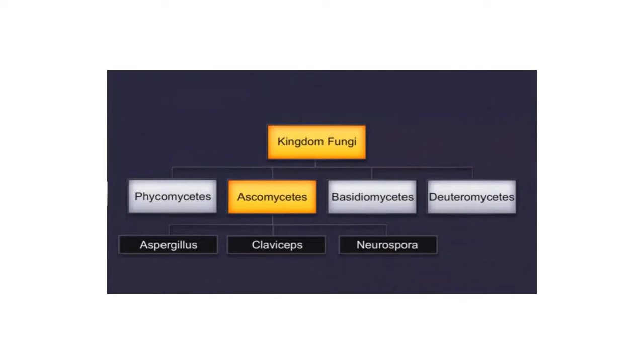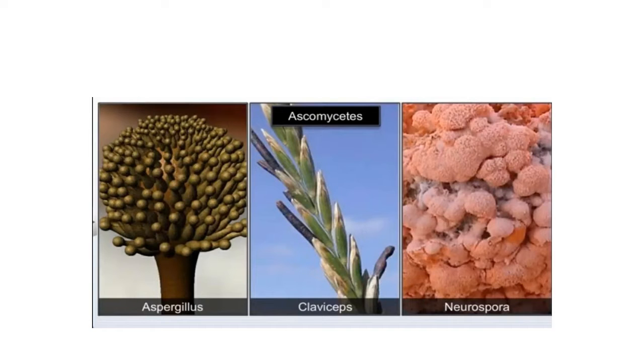Let us discuss one more class under Kingdom Fungi: Ascomycetes. Examples of Ascomycetes include Claviceps, Neurospora, and Penicillia.